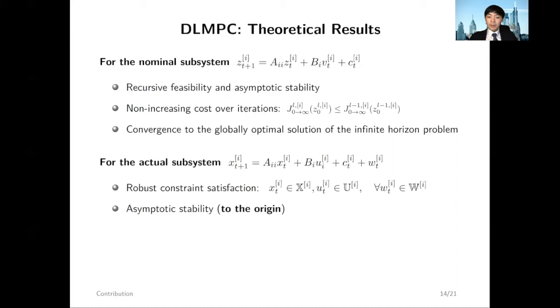For the actual subsystems, we can guarantee robust constraint satisfaction despite deviation from reference trajectories, and the global system will converge asymptotically to the origin.